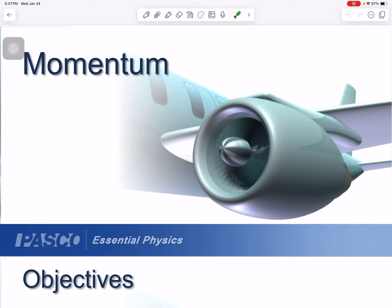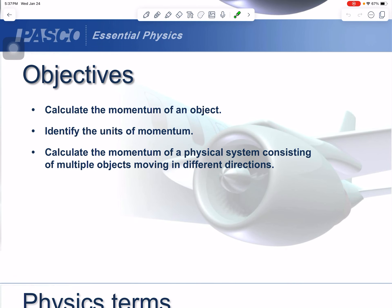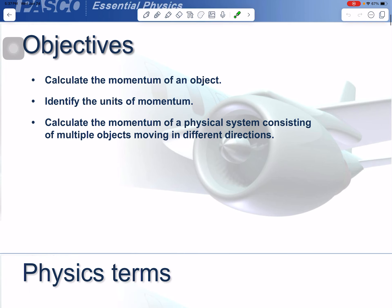Hello, this is the first lecture on Momentum, which is our new topic. It corresponds to pages 308 and 309 in the textbook if you want to do some additional reading. Our objectives for this lesson are that you'll be able to calculate the momentum of an object, identify the units of momentum, and calculate the momentum of a physical system consisting of multiple objects moving in different directions. These are very straightforward — you'll have no problems doing it.